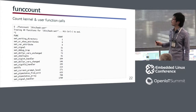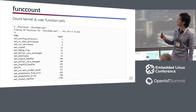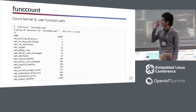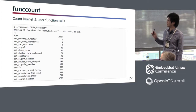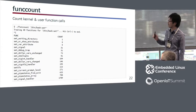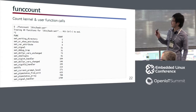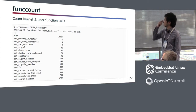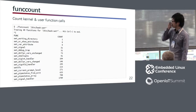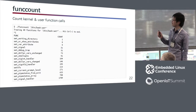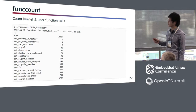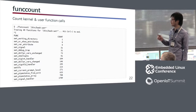FuncCount counts kernel and user function calls. In this example, it is tracing the functions of bash whose names start with 'set'. You can easily find which function is most frequently called, and it's useful for reducing CPU consumption.